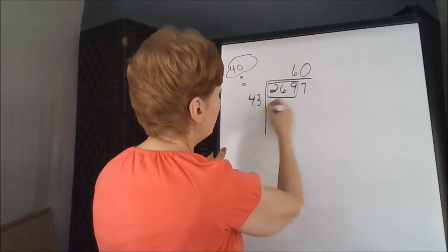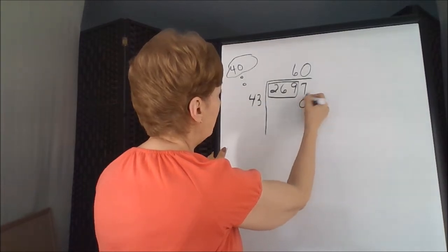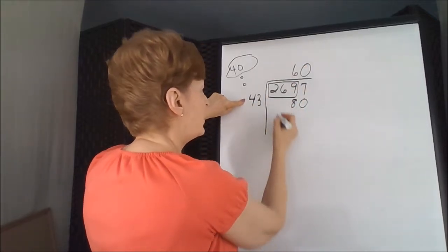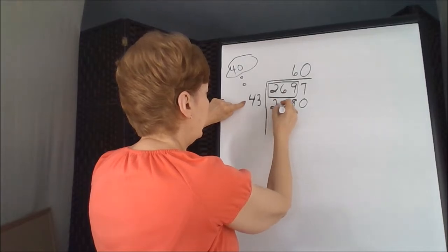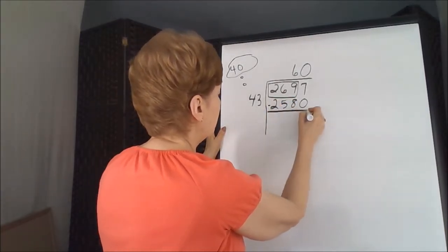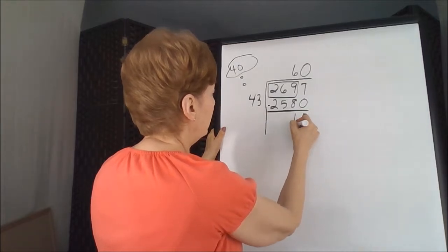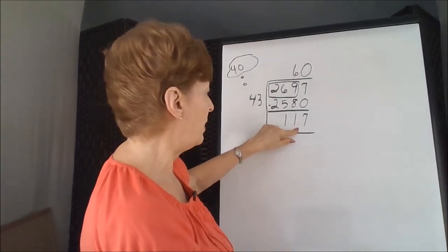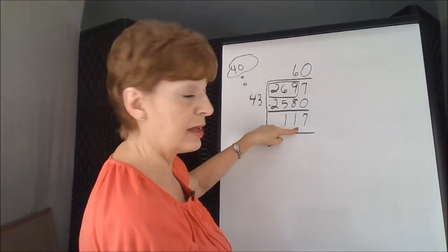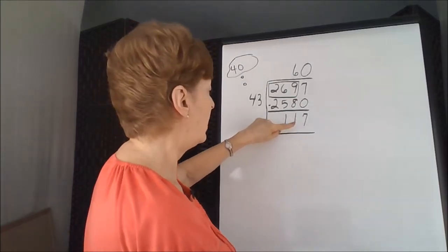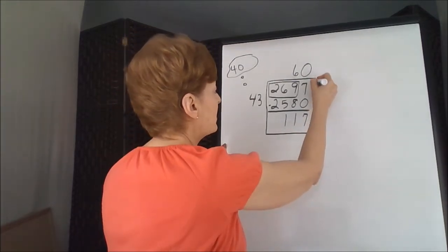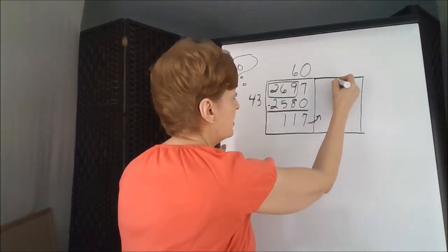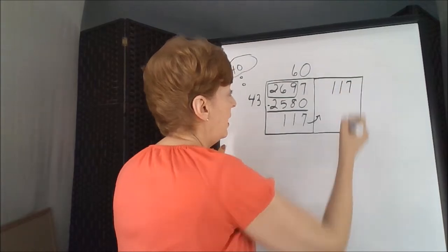We're going to multiply back. 0 times the 43 is 0, 6 times 3 is 18, carry 1, 6 times 4 is 24, plus 1 is 25. And we'll subtract: 7, 1, and 1. This remainder, at this point, we don't have to worry about is it bigger or smaller than the answer as we did in the traditional way. We just know that we have an additional box. So another box is done, and this 117 is transferred to the second box. And we start our process again.